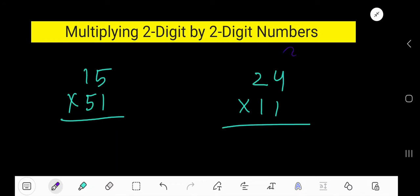Multiplying two-digit by two-digit numbers. Okay, let's start with this problem: 15 times 51. So start with this one. 1 times 5 is 5, then 1 times 1 is 1. Okay, now we have to multiply by 5.